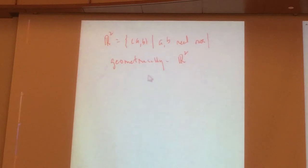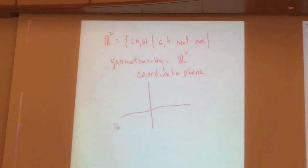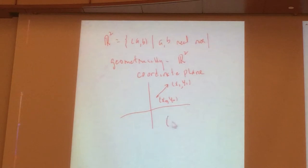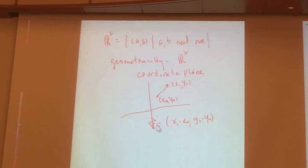Geometrically, R2 is the coordinate plane. You're all familiar with that. A vector is, according to the physicists, simply a directed line segment. If you have a directed line segment from the point (x0, y0) to the point (x1, y1), then I can associate with this directed line segment the pair of numbers x1 minus x0, y1 minus y0, and call that a vector. Physicists also say that a vector is a quantity that has two characteristics: magnitude and direction.